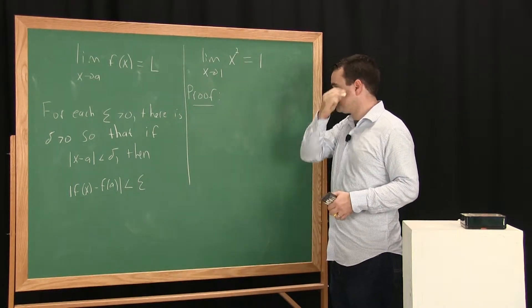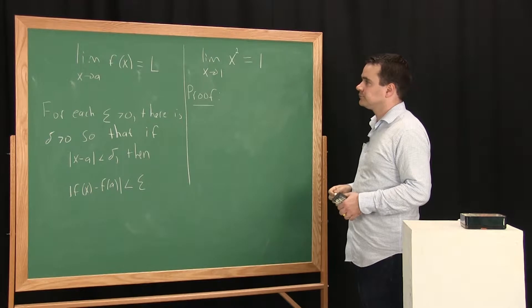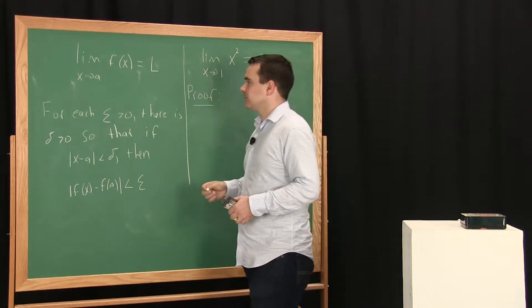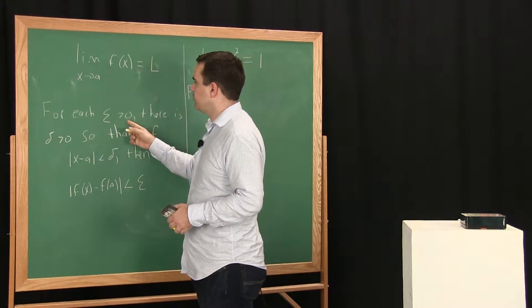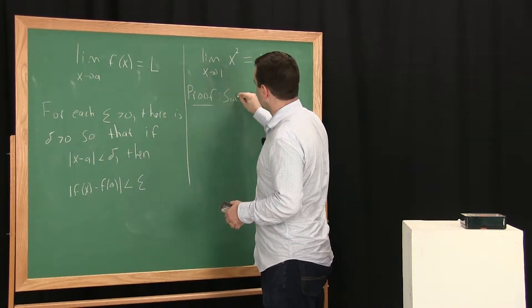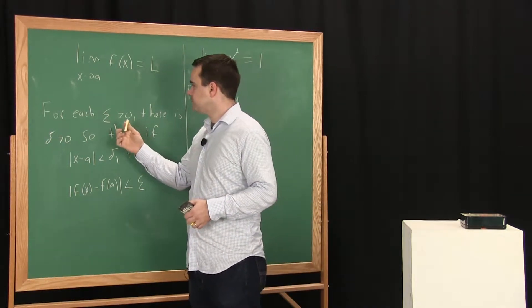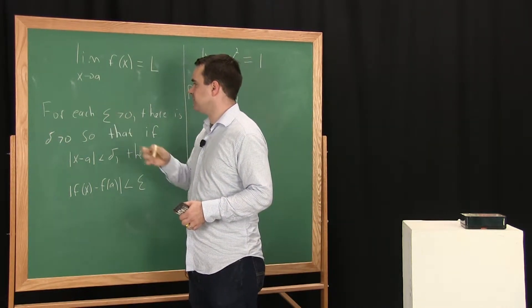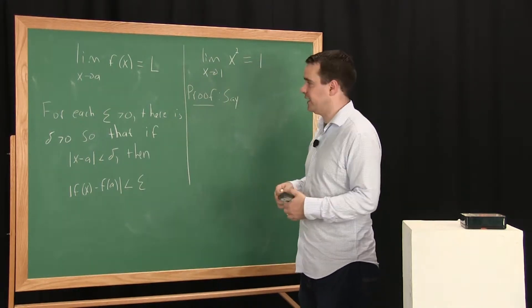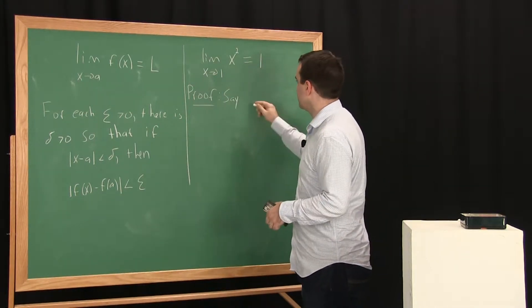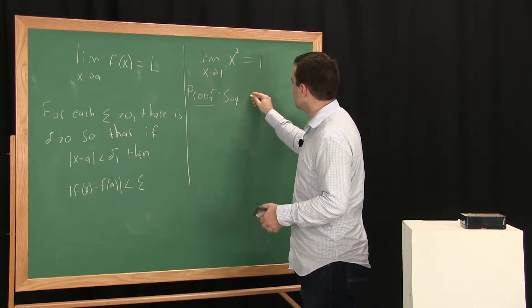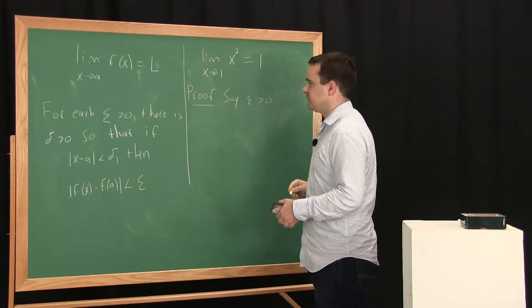Let's write down that proof. The way that every one of these proofs starts is by saying: suppose this epsilon greater than 0 has been specified. You don't know what it is, but someone has specified it and you know it's bigger than 0. So we say: let epsilon be greater than 0.